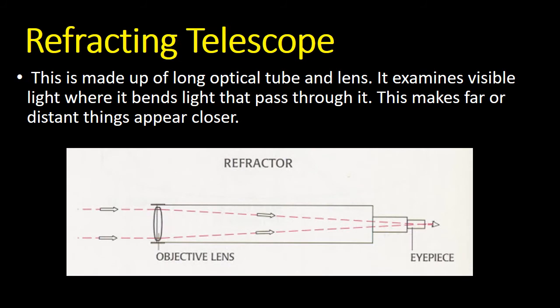A refracting telescope is made up of long optical tube and lens. It examines visible light where it bends light that pass through it. This makes far or distant things appear closer.